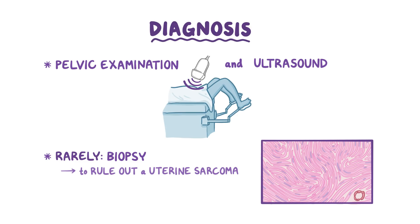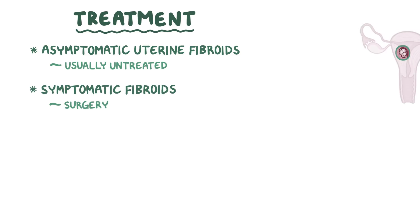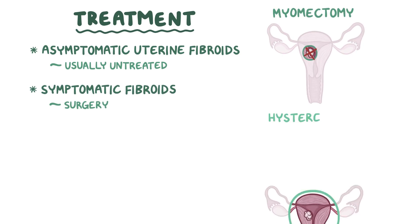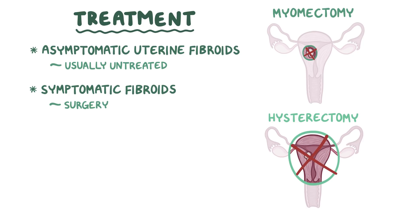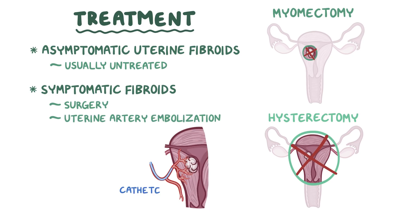If it's a fibroid, the biopsy will show a whorled pattern of smooth muscle bundles, like a wave in the ocean, with well-defined borders. Treatment of uterine fibroids varies. Asymptomatic uterine fibroids are usually left untreated. Symptomatic fibroids can be treated with surgery, either a myomectomy or a hysterectomy, if the woman is no longer interested in childbearing. Another non-invasive option is uterine artery embolization, where a catheter is used to reduce blood flow to the fibroids, which causes them to shrink. Medications aren't typically used for treatment, except gonadotropin-releasing hormone analogs, which help shrink fibroids before surgery.